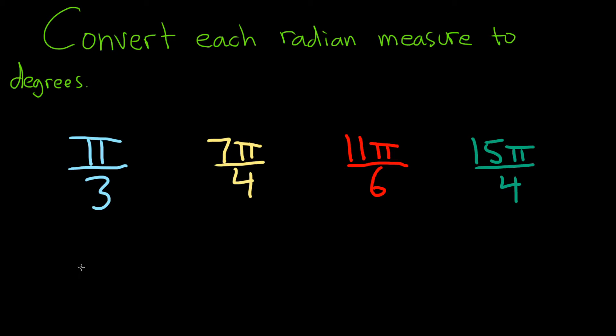Convert each radian measure to degrees. To convert a radian measure to degrees, you have to multiply by 180 over pi.